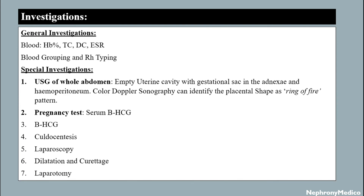Investigations: general investigations include hemoglobin percentage, TC, DC, ESR, and blood grouping. Special investigations include ultrasonography of the whole abdomen showing empty uterine cavity with gestation sac in the adnexa and hemoperitoneum; color Doppler sonography can identify the placenta showing a ring-of-fire pattern; pregnancy test with serum beta-hCG; culdocentesis; laparoscopy; dilatation and curettage; and laparotomy.